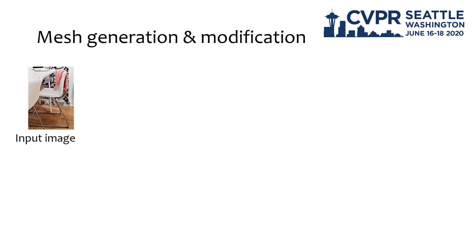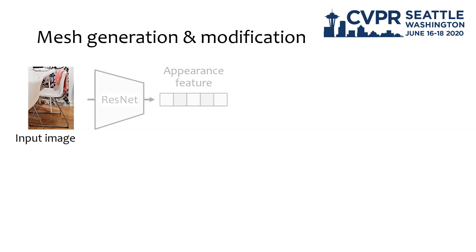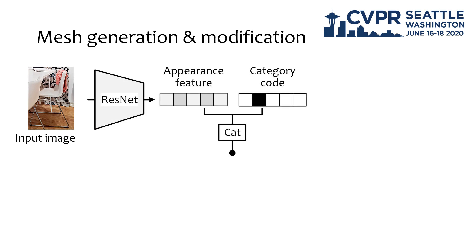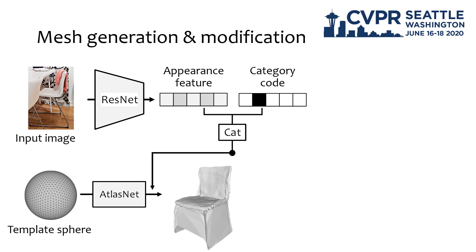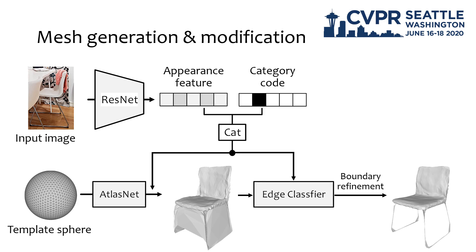In mesh generation, from each object image we firstly predict the mesh and progressively modify the topology to approximate its 3D shape. During this phase, we concatenate the appearance feature and the detected category code to regress its 3D shape from a template sphere using AtlasNet. Note that the current topology of the shape is still homeomorphic with the sphere.